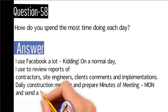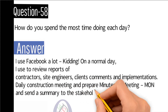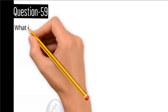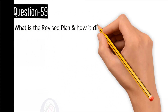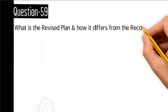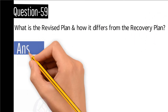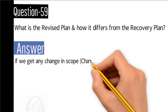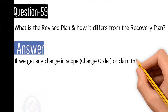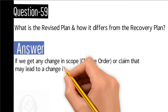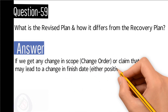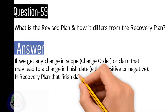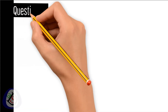Question number 59: What is the revised plan and how does it differ from the recovery plan? Answer: If we get any change in scope, a change order, or a claim that may lead to a change in finish date — either positive or negative — that is the revised plan. In the recovery plan, the finish date is fixed.